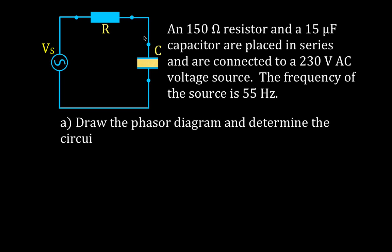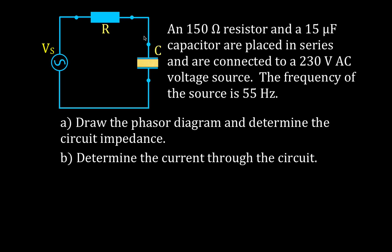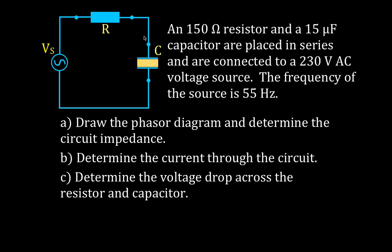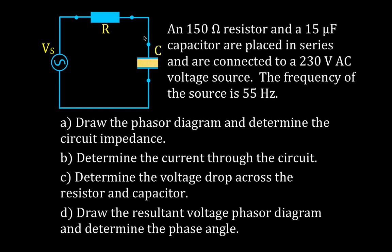In this video we're going to draw the phasor diagram for the impedance and calculate the impedance. We're going to determine the current through the circuit, determine the voltage drops across the resistor and the capacitor, draw the phasor diagram for the voltage, and determine the angle phi — the phase angle.